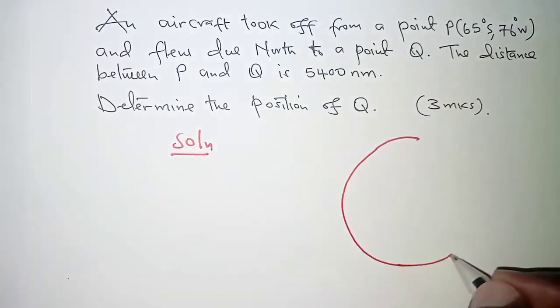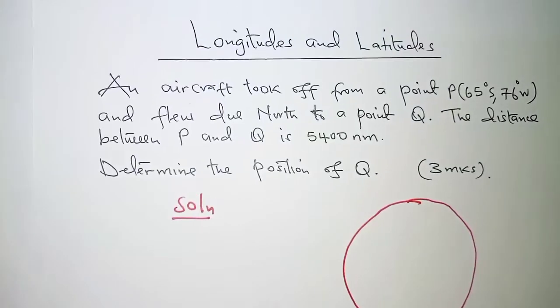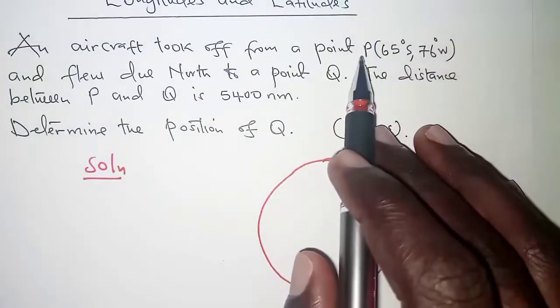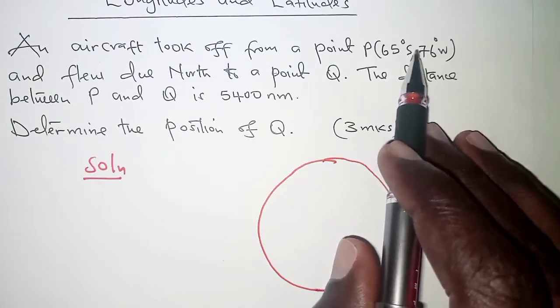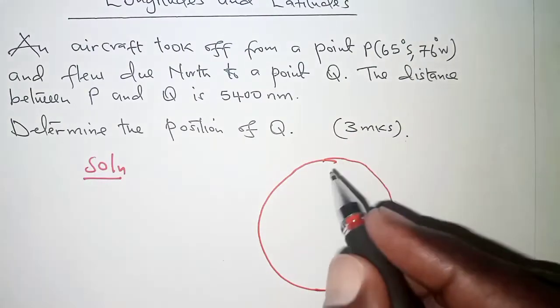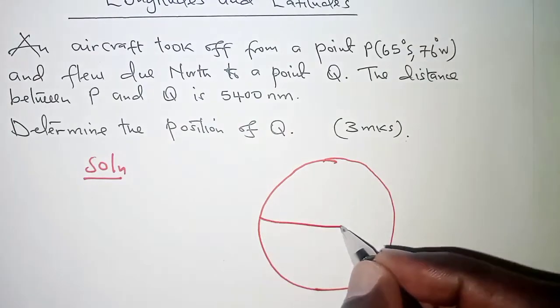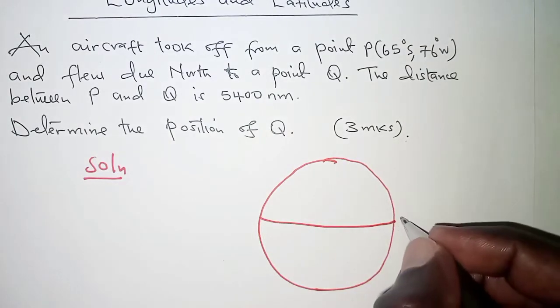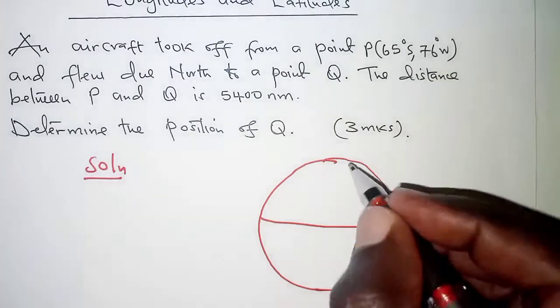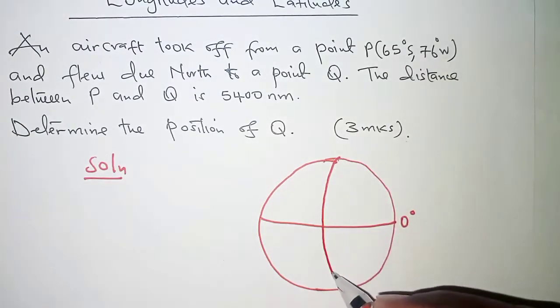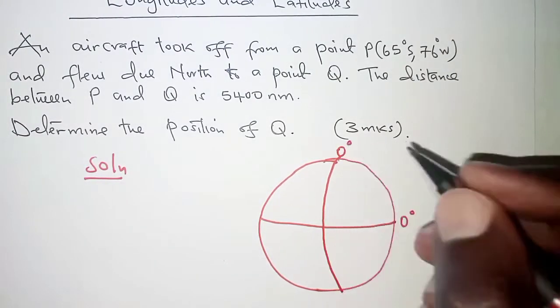We have to locate the position of point P. P is on 65 degrees south, 76 degrees west. We will begin by having the reference points. We have got the equator at 0 degrees. We also have the prime meridian at 0 degrees.